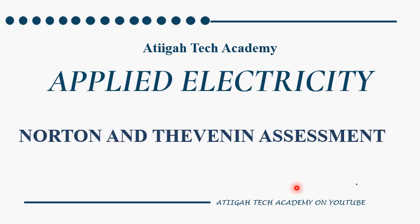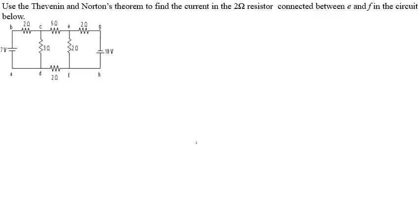This is Attega Tech Academy — please don't forget to like, share, and subscribe to the channel for more. Let's look at our first question: they said use Norton's and Thevenin's theorem to find the current in the 2-ohm resistor connected between E and F in the circuit below. This is the E and F branch.